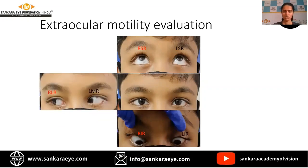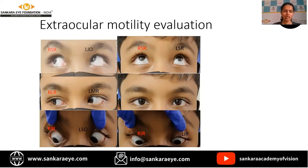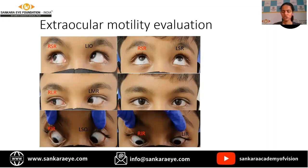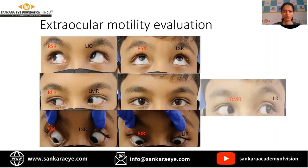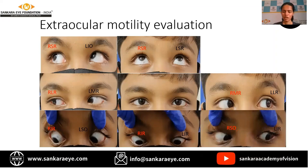In dextroversion, you check the right lateral rectus and the left medial rectus. In dextrodepression, you check the right inferior rectus and the left superior oblique. In levoversion, you check the left lateral rectus and the right medial rectus. In levodepression, you check the left inferior rectus and the right superior oblique.